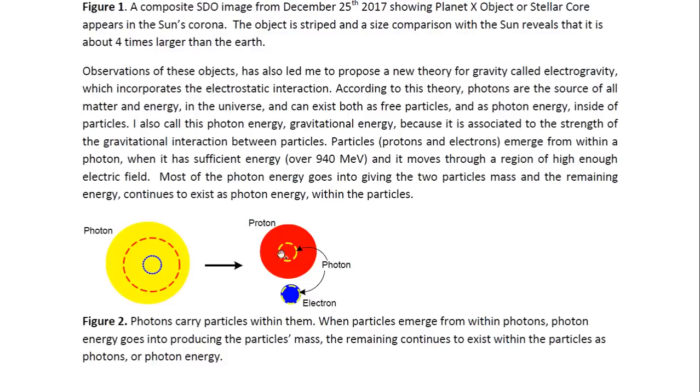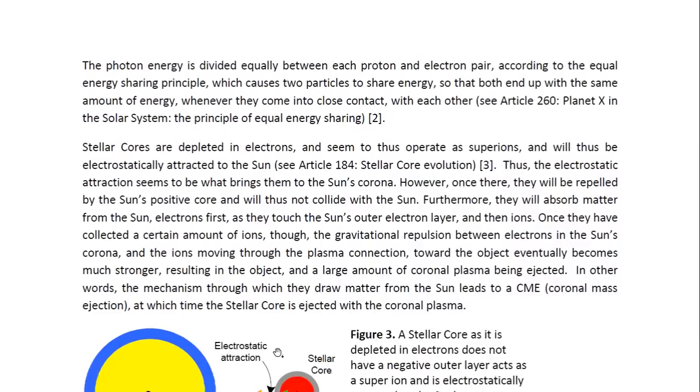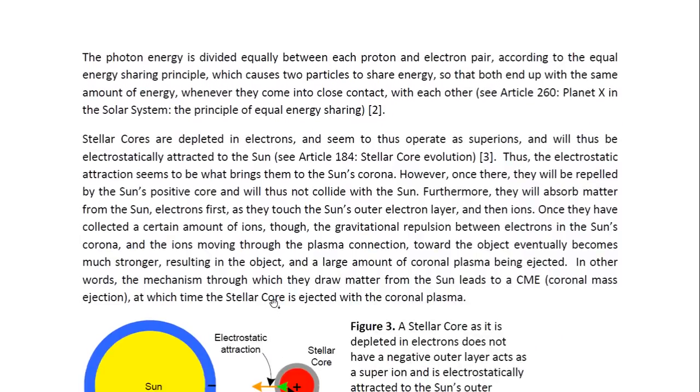Now the photon energy is divided equally between each proton and electron pair. So that is the photon energy that's now within the particles. And this occurs according to the equal energy sharing principle, which causes two particles to share energy so that both end up with the same amount of energy whenever they come into close contact with each other. And you may look at article 260 entitled Planet X in the Solar System the principle of equal energy sharing for more details.